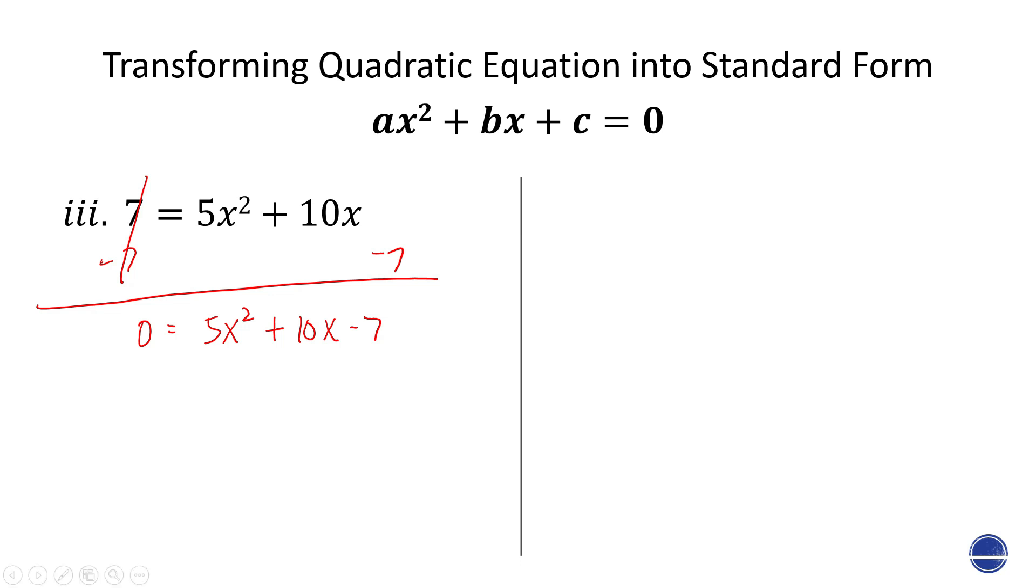Last example. We have here 2x times x minus 5 equals 8. If you see this, you just need to distribute that 2x to x minus 5. So this is going to be 2x squared minus 10x equals 8. And then move that 8 to the left. So now we have 2x squared minus 10x minus 8 equals 0.